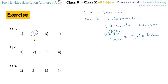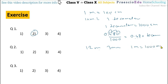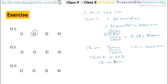Question number 2: How will you write 12 meter 3 mm in decimal form? We need to convert mm to meters. Since 1 meter equals 1000 mm, 3 mm divided by 1000 equals 0.003 meter. So 12 meter plus 0.003 equals 12.003 meter. This is given in option number 2.